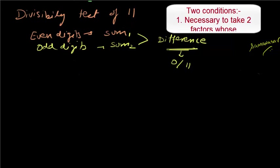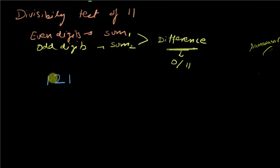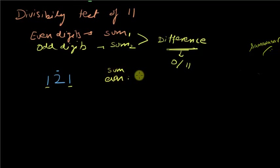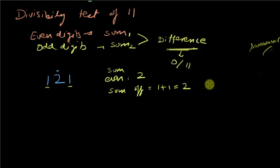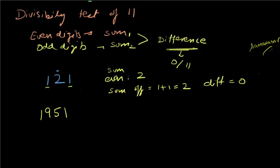Let me start with a simple example: the number 121. The even-position digit is just 2, and the odd-position digits are 1 and 1 — the first, second, and third digits respectively. The sum of the even digits is 2, and the sum of the odd digits is 1 + 1 = 2. The difference of these two sums is 0, which means 121 is divisible by 11.